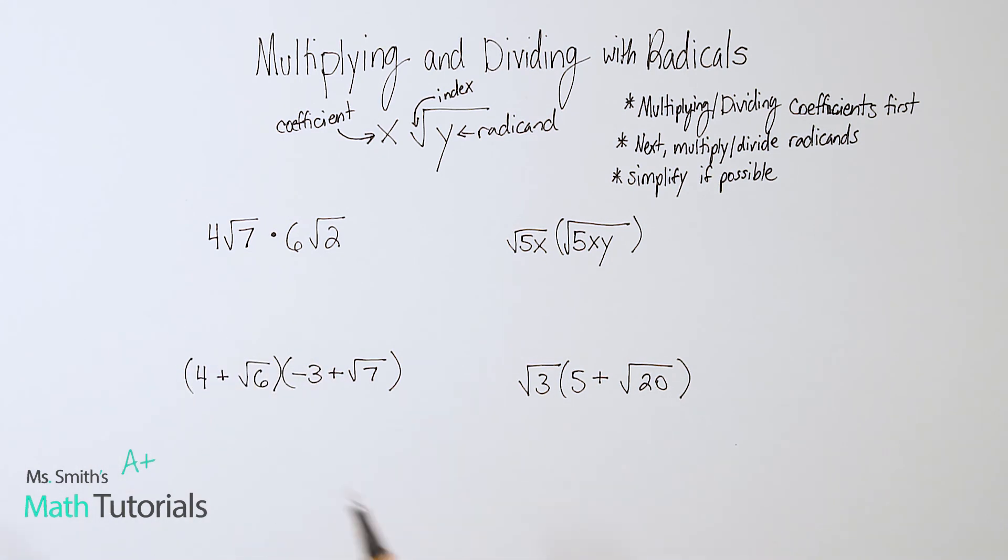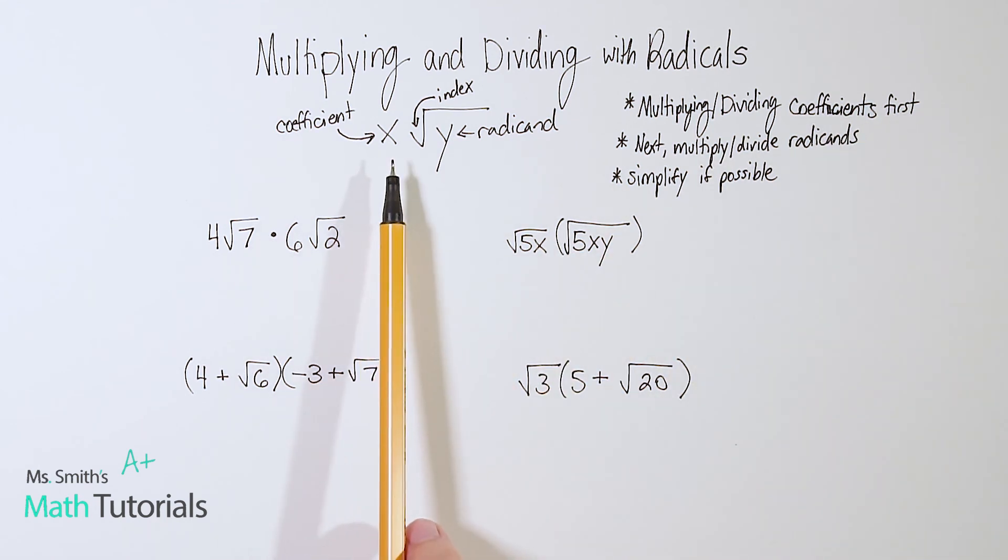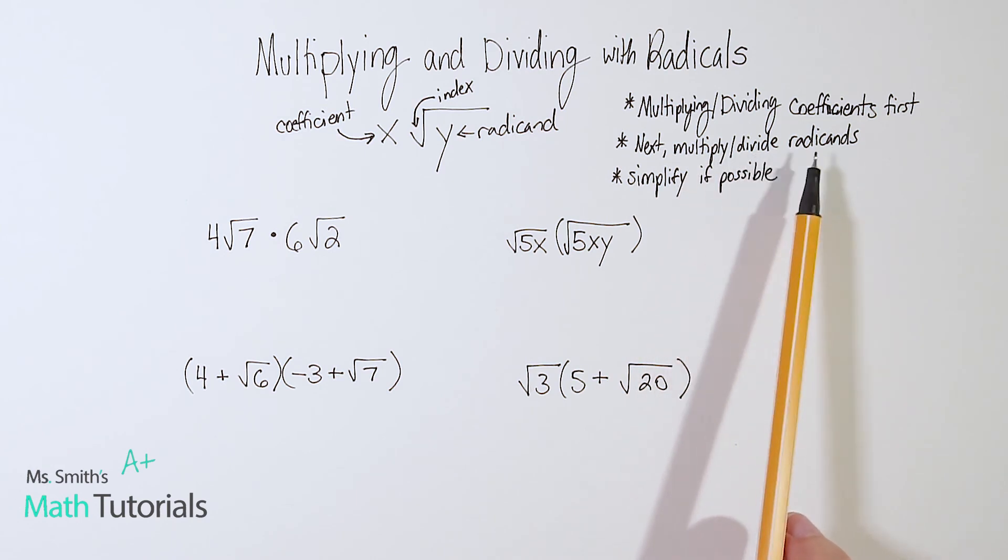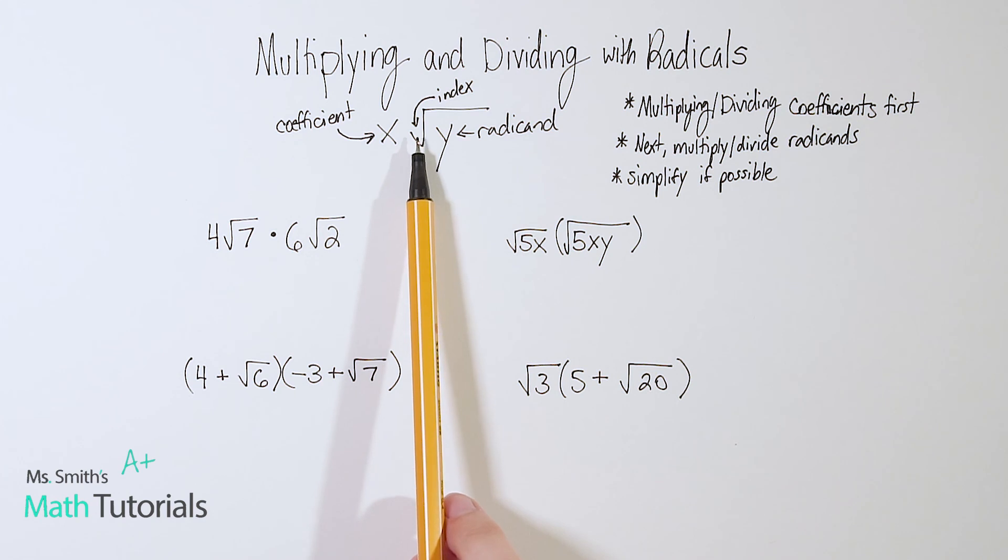So let's just walk through the basic steps of multiplying and dividing with radicals. For your first step, you're going to be multiplying or dividing the coefficients first. So remember the coefficients are the numbers outside. Next, you're going to multiply or divide the radicands, so the numbers inside. The index will stay the same.